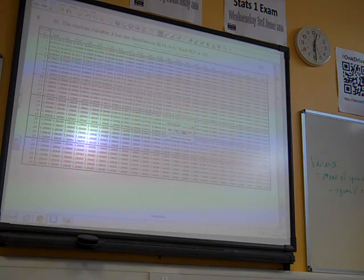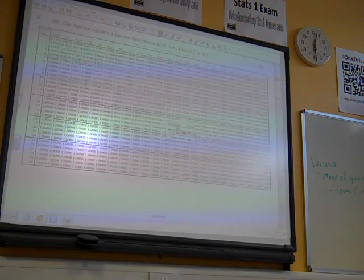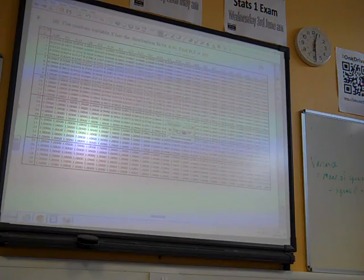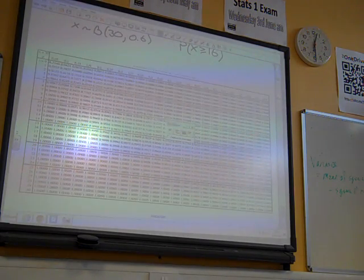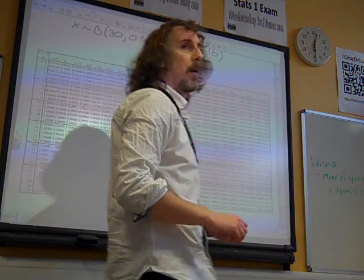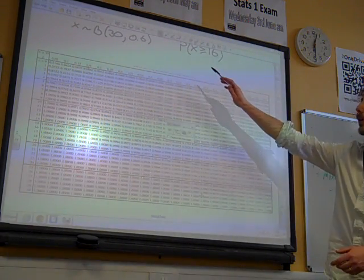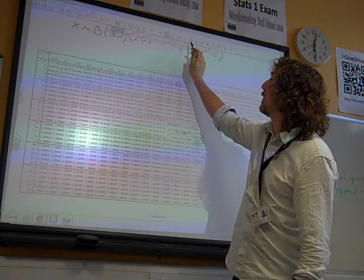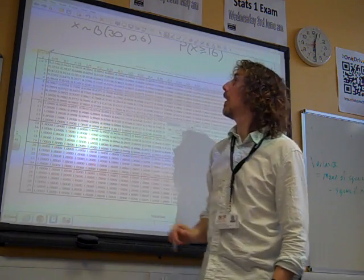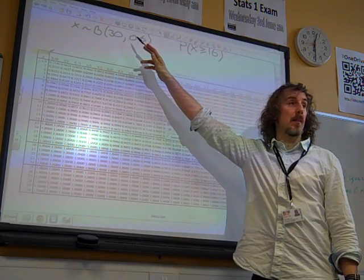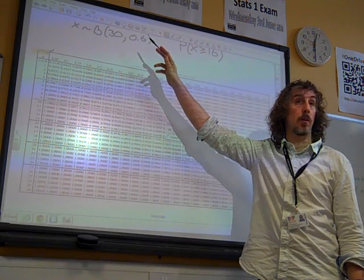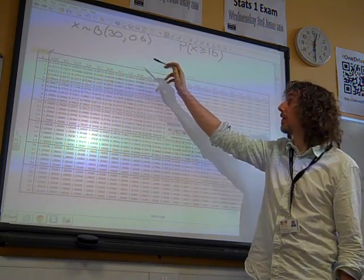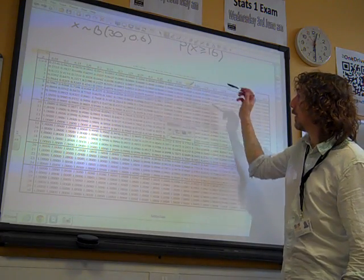So n equals 30. And we're looking for particular values in here. Well, look, n is 30, so we look at the 30 table. And p is 0.6. So that means 30 independent trials with a probability of success in each one of 0.6.